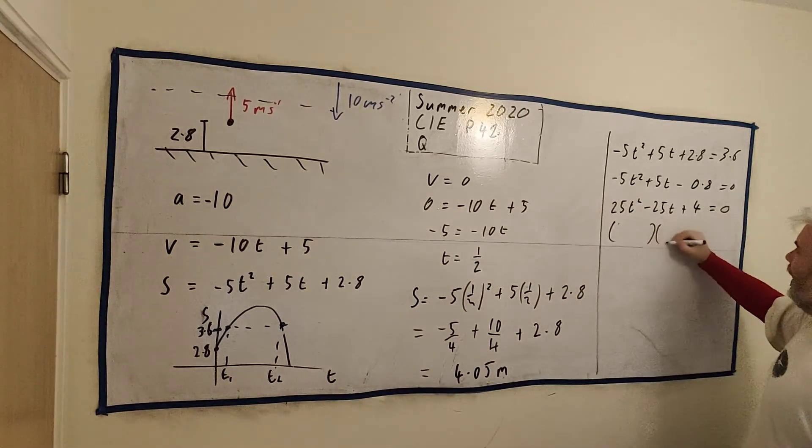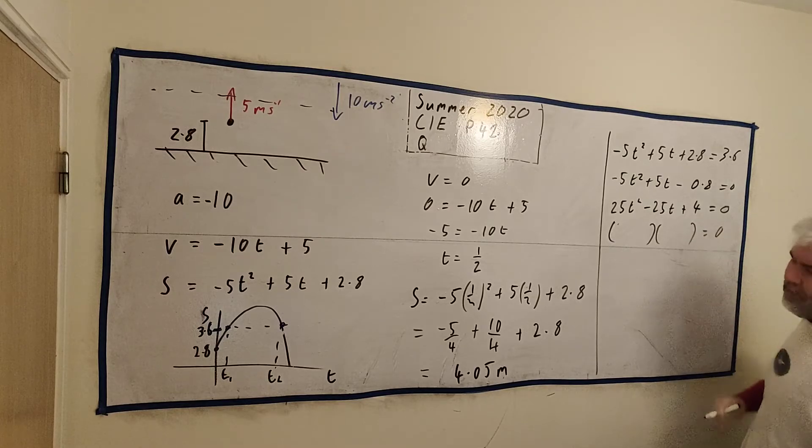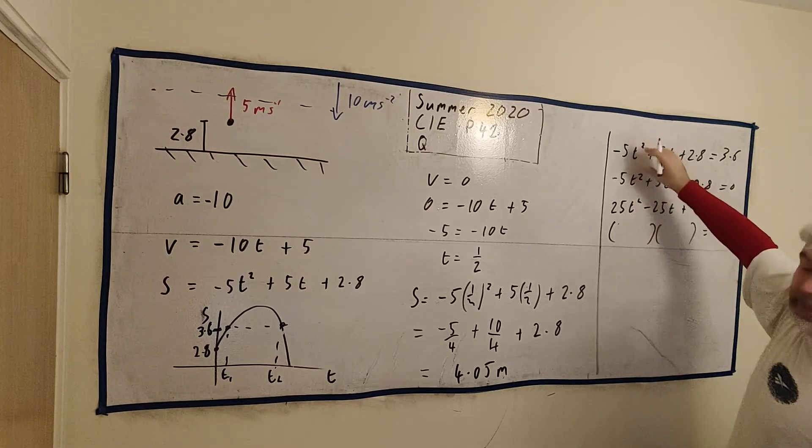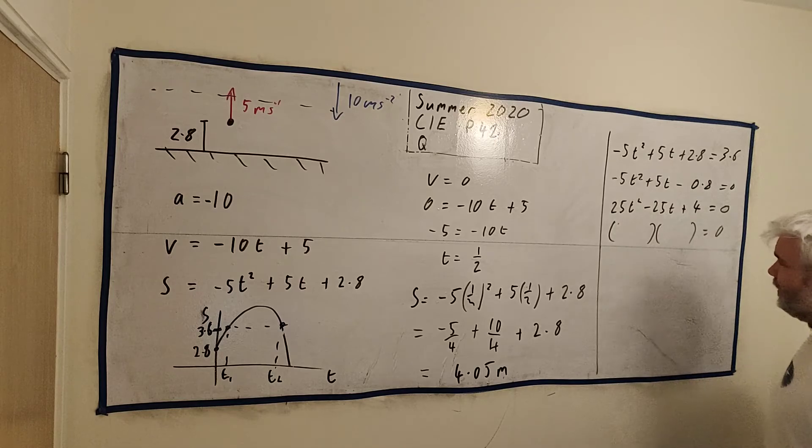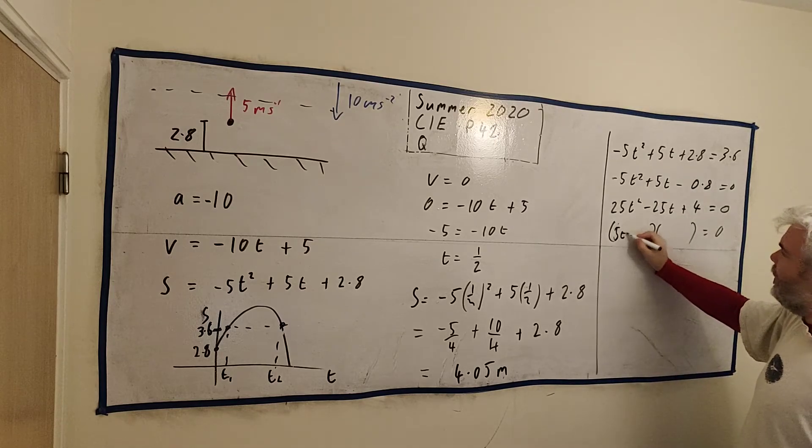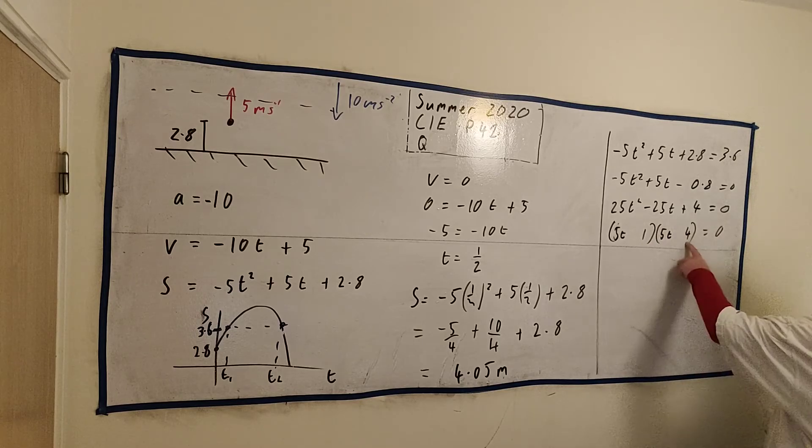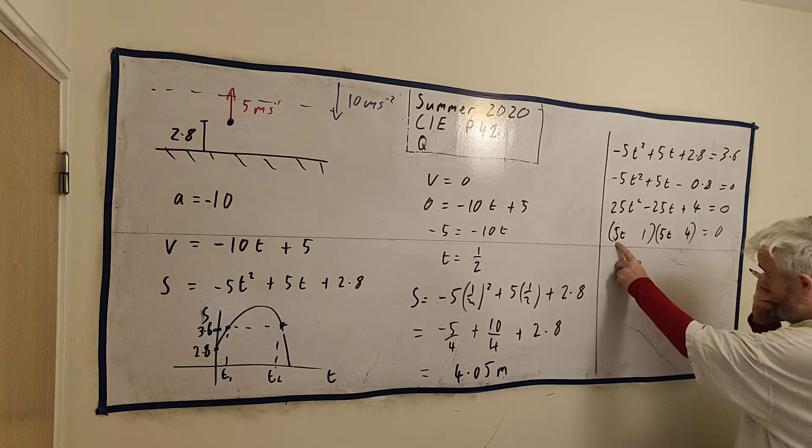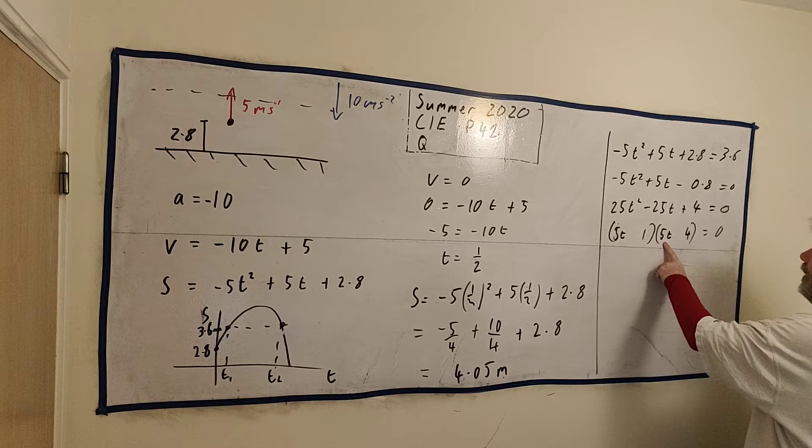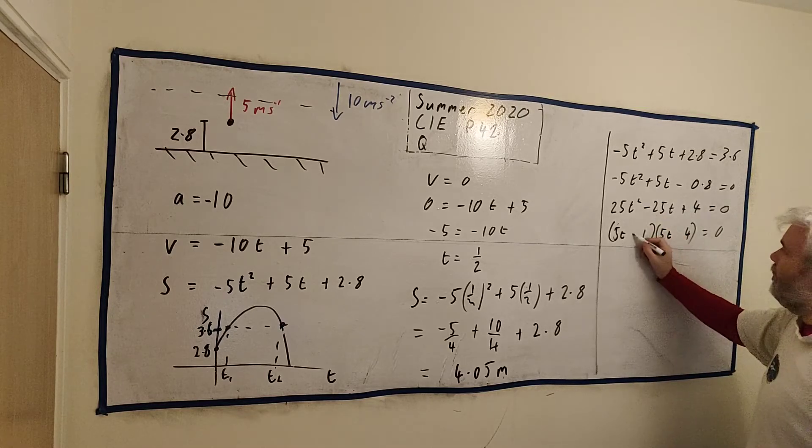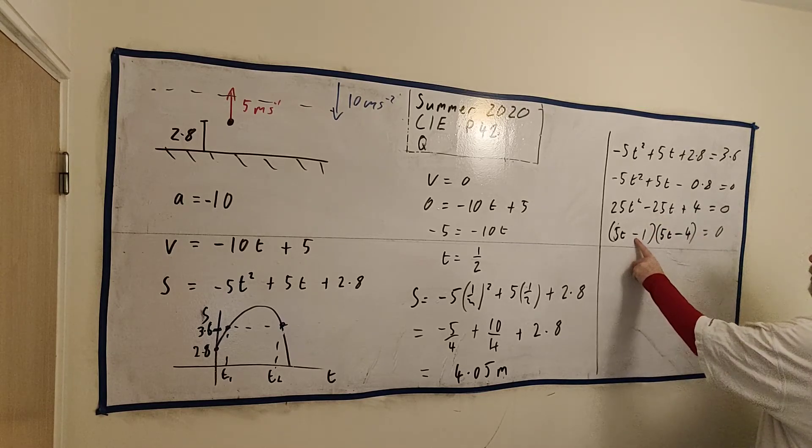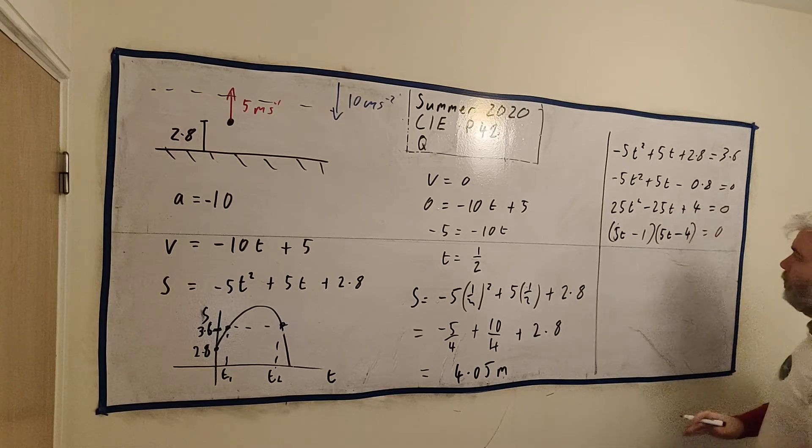And we can go ahead and factorize this, although you could just use the minus b formula on either of these. We get 5t and 5t works, and 4 and 1 works. We get 20t and another 5t. So yes, we can get 25t if they're both minus. Minus 1 by minus 4 we'll get plus 4.